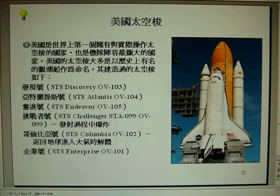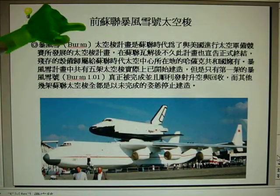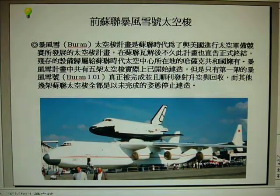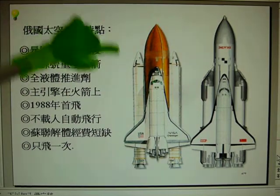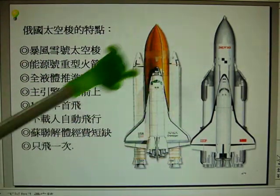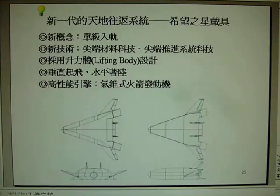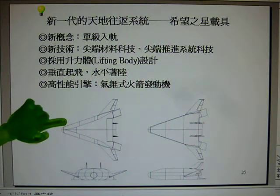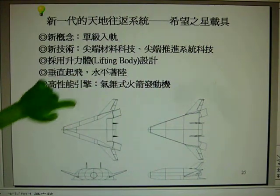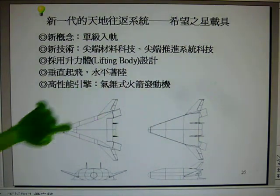We will introduce the space shuttle of America, space shuttle teams, and the Soviet Union space shuttle, including a comparison between the United States and Soviet Union space shuttles. Finally, we will introduce the next-generation space shuttle, the Venture Star, and its aerospike engine and lifting body.